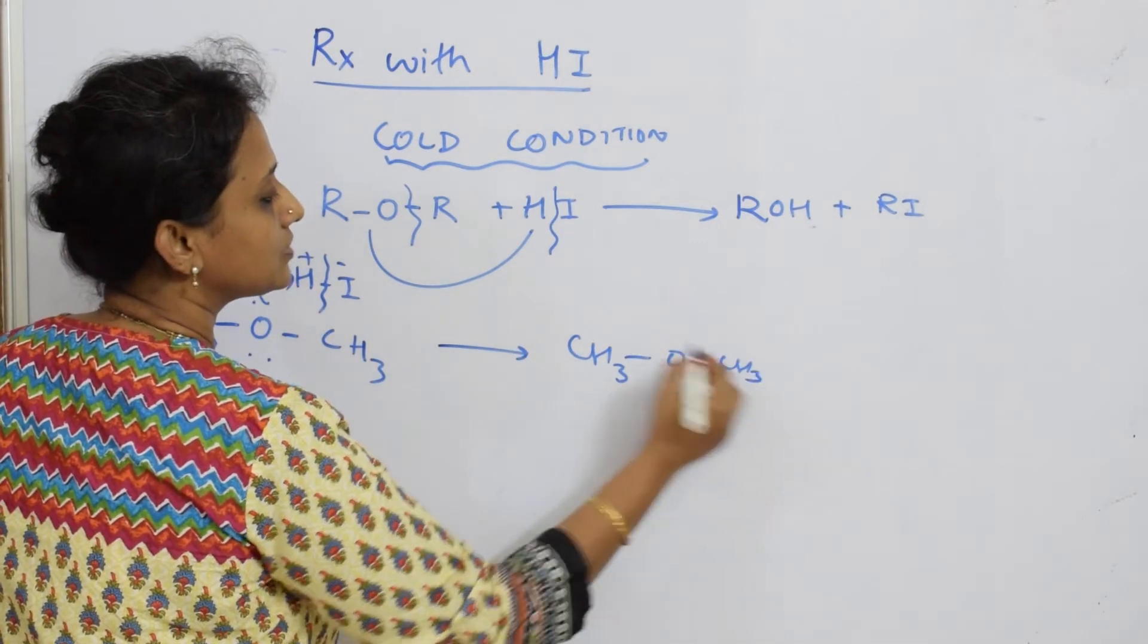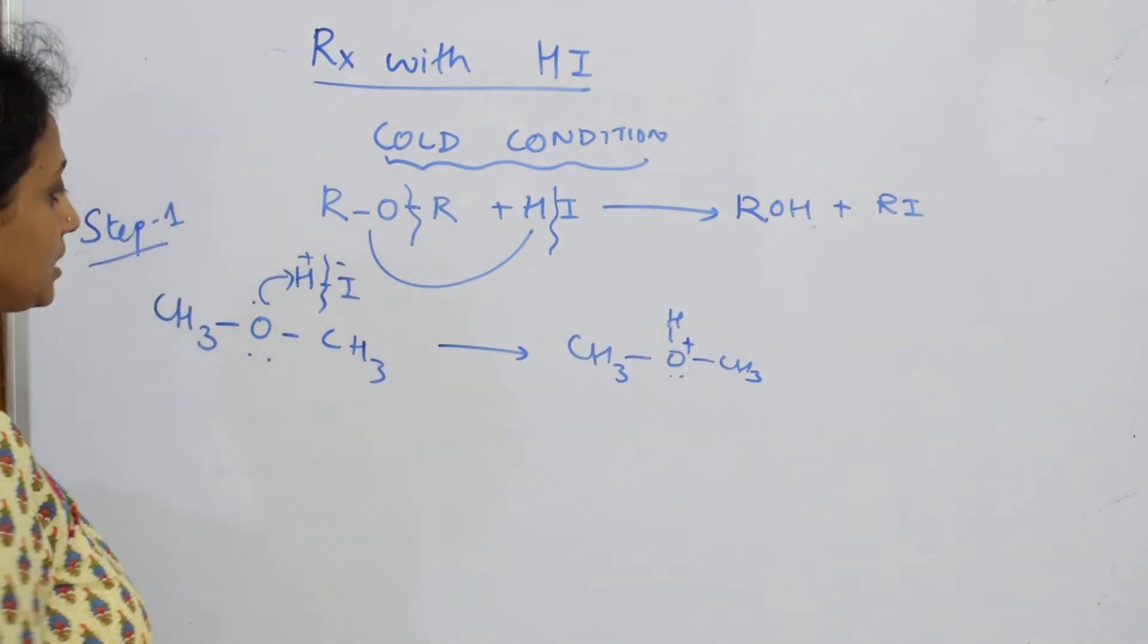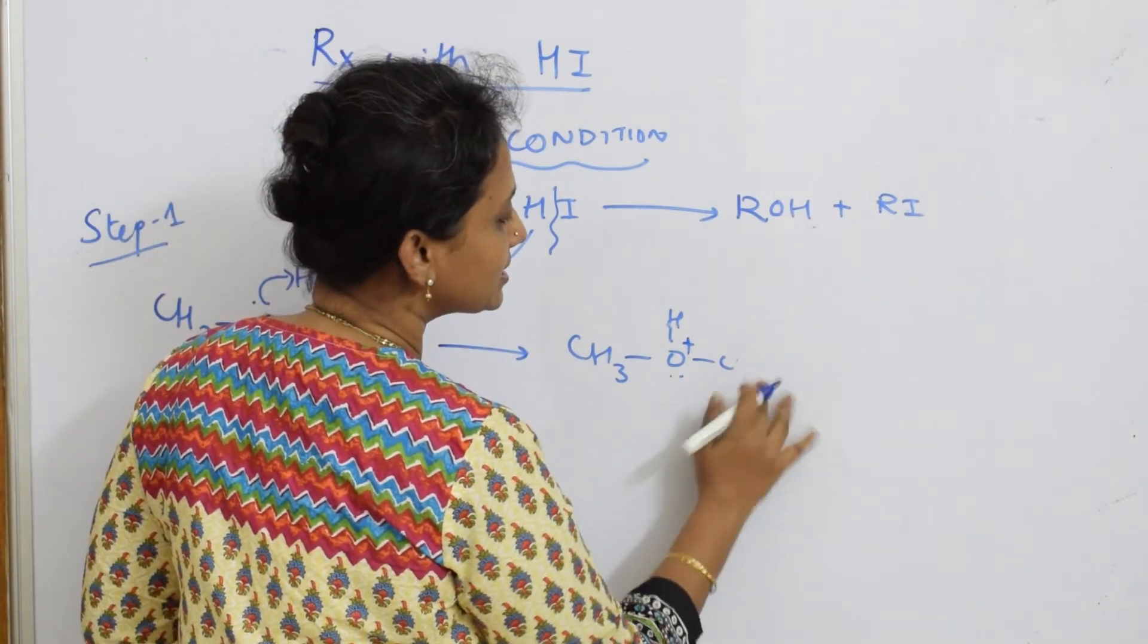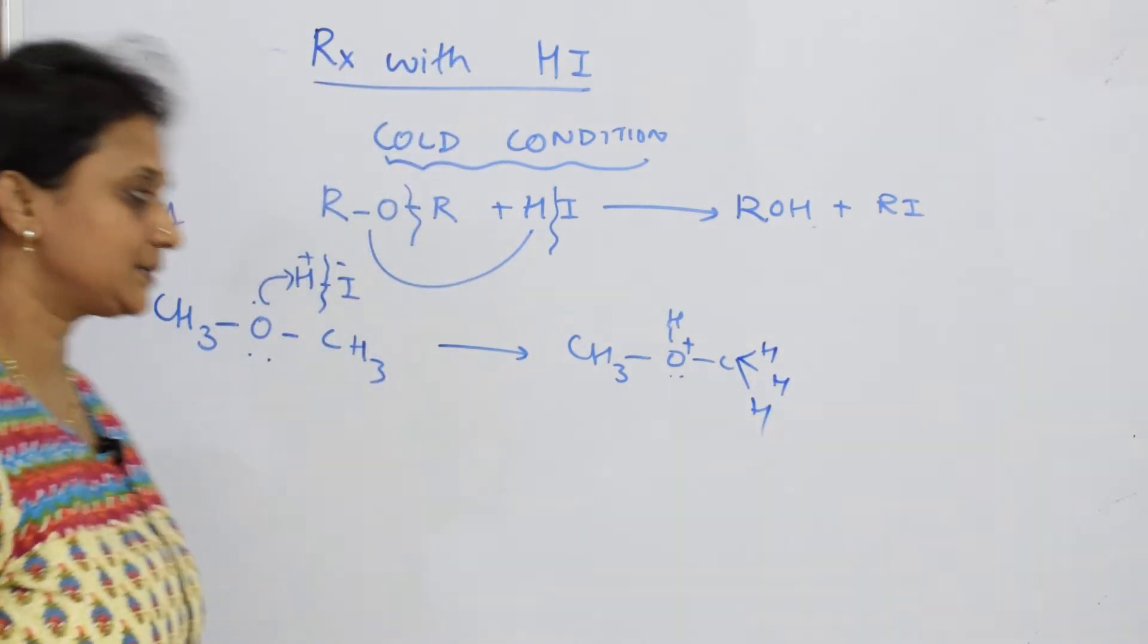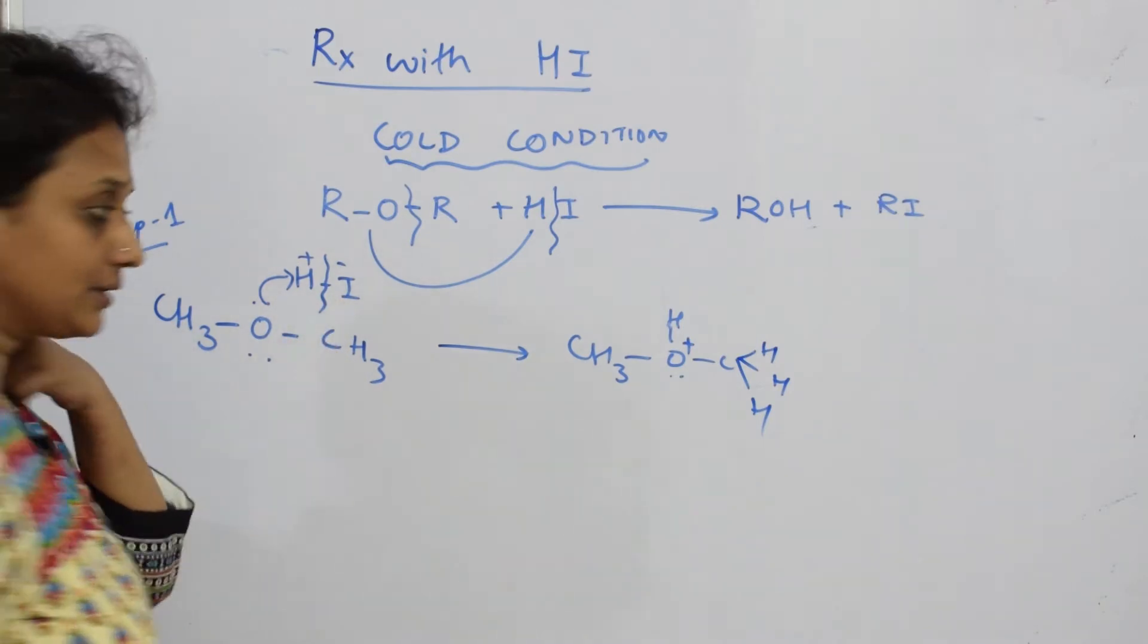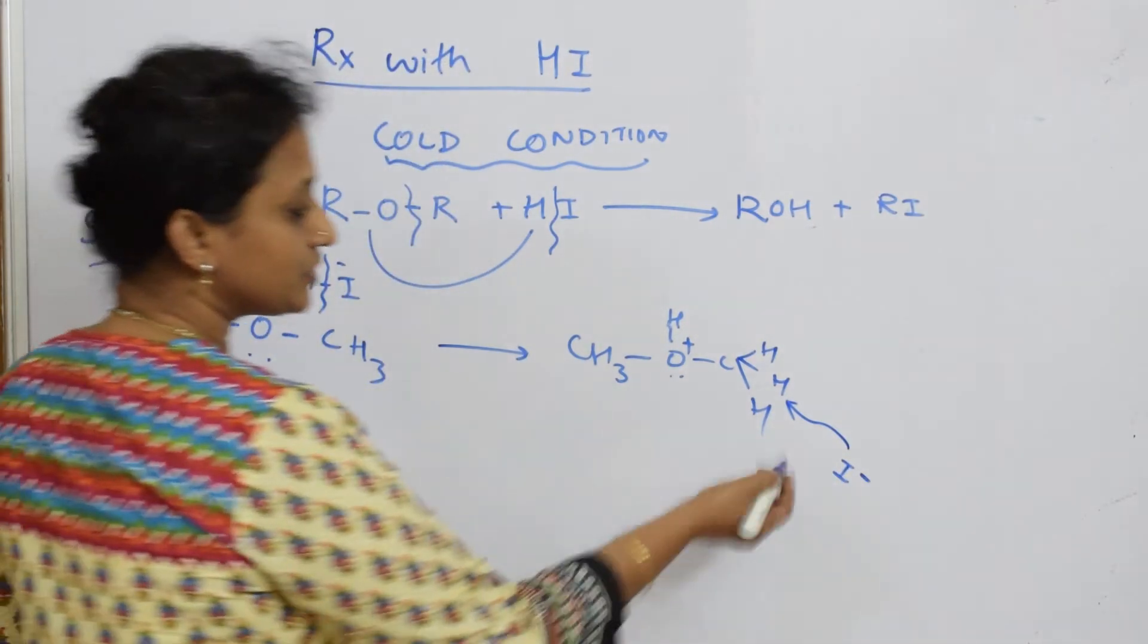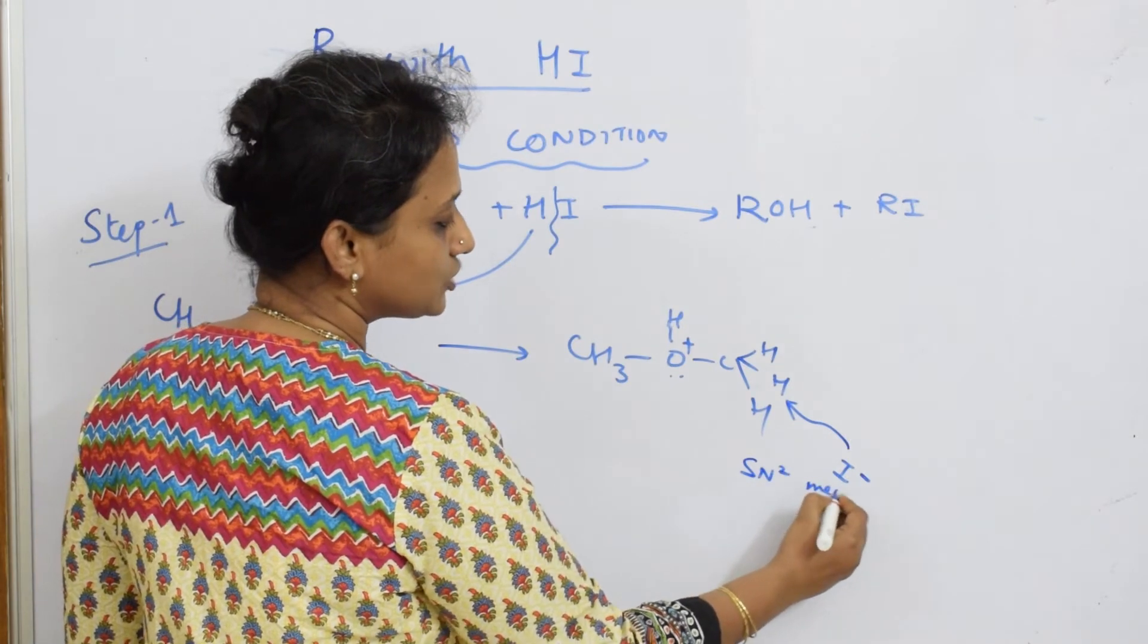How does this look? CH3-O-CH3H. This has become plus because it's lost a pair of electrons. Now, in the second step, observe: CH3—can I write it as H, H, and H? Correct. Now this iodine, whatever is there here, will come and attack this group. So which attack is this? It's an SN2 mechanism.